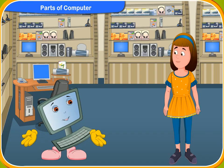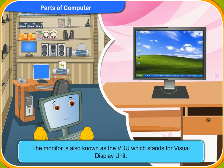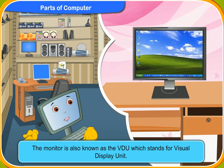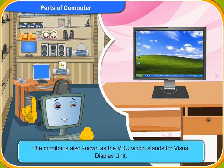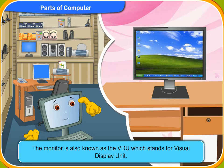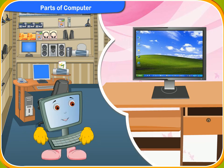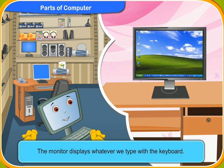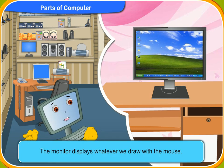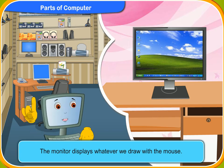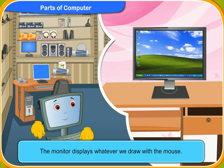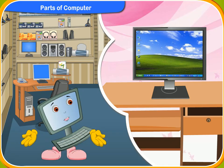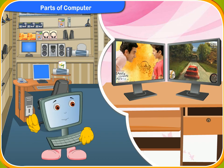Let's start with the monitor. The monitor is also known as the VDU, which stands for Visual Display Unit. It looks like a television. The monitor displays whatever we type with the keyboard. The monitor also displays whatever we draw with the mouse. You can also watch movies or play games on the monitor.